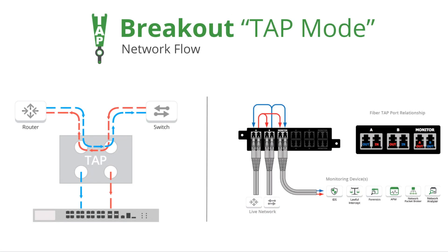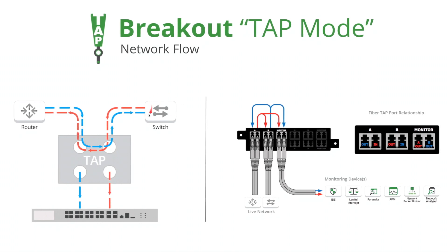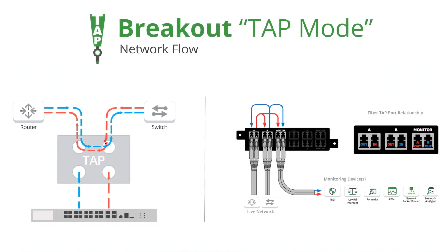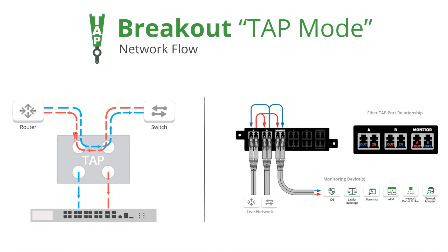Let's take a closer look at breakout mode. In this diagram, you see a router plugged into port A and you see a switch plugged into port B. The traffic from router to switch is depicted with the blue line, which is the west to east traffic.